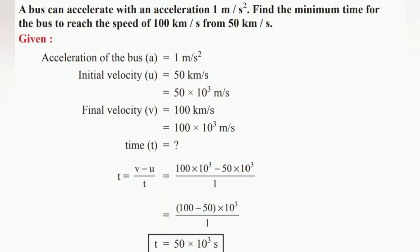3rd one — a bus can accelerate with an acceleration of 1 m/s². Find the minimum time for the bus to reach 100 km/h from 50 km/h. Convert: initial velocity u = 50 × 10³ m/s, final velocity v = 100 × 10³ m/s. Using t = (v − u) / a = (100 × 10³ − 50 × 10³) / 1 = 50 × 10³ seconds.